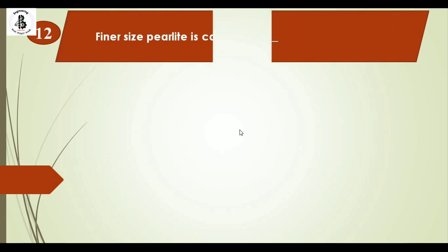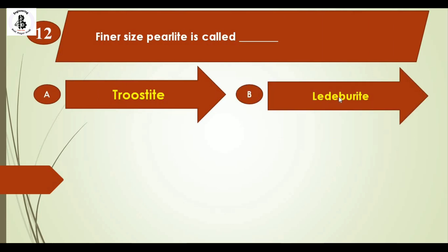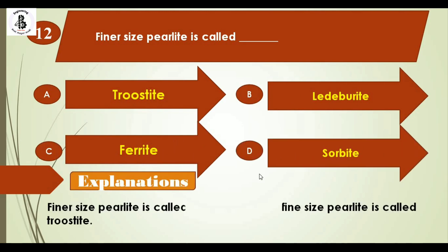Question 12: Finer size pearlite is called as — Option A: trostite, Option B: Ledeburite, Option C: ferrite, Option D: sorbite. A finer pearlitic structure is called sorbite, and a very fine size of pearlite is known as trostite. Here the question refers to finer size pearlite, which is the sorbite structure. The right answer is option D: sorbite.